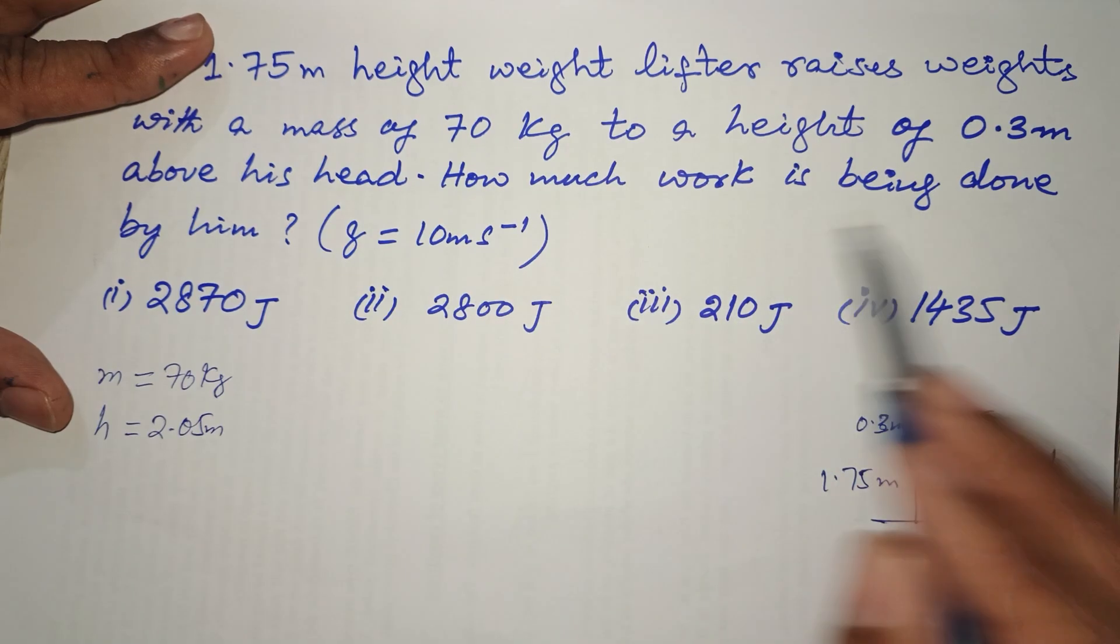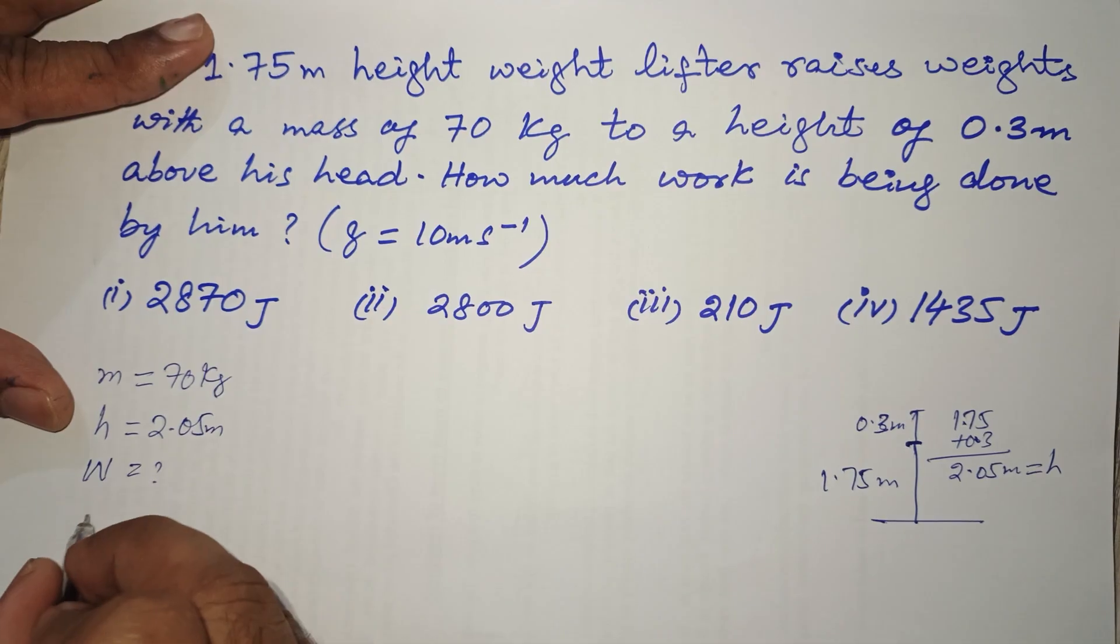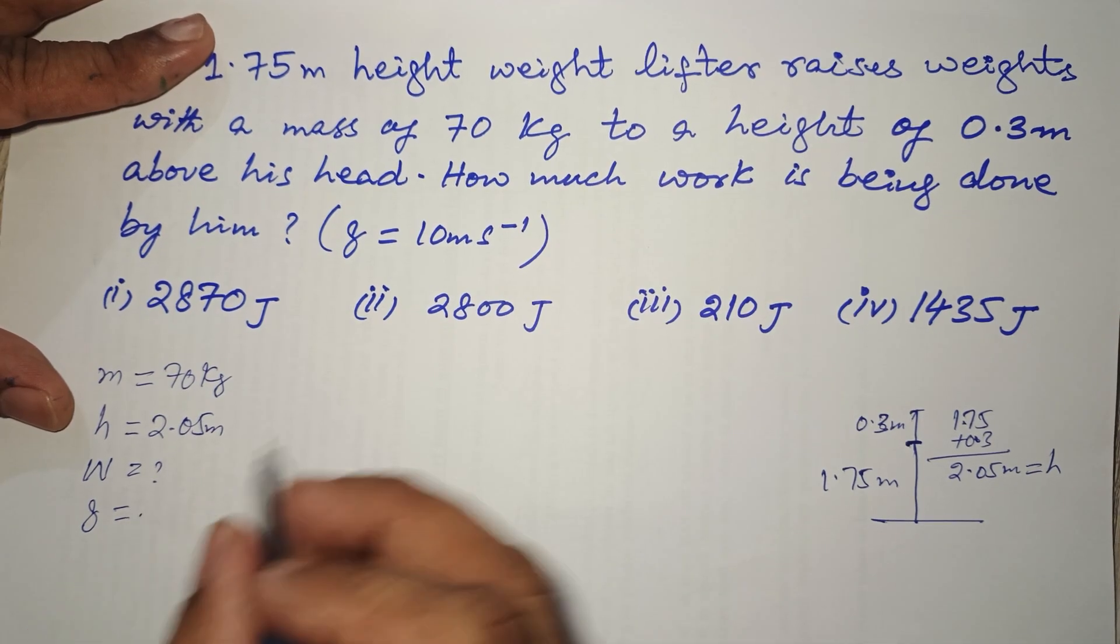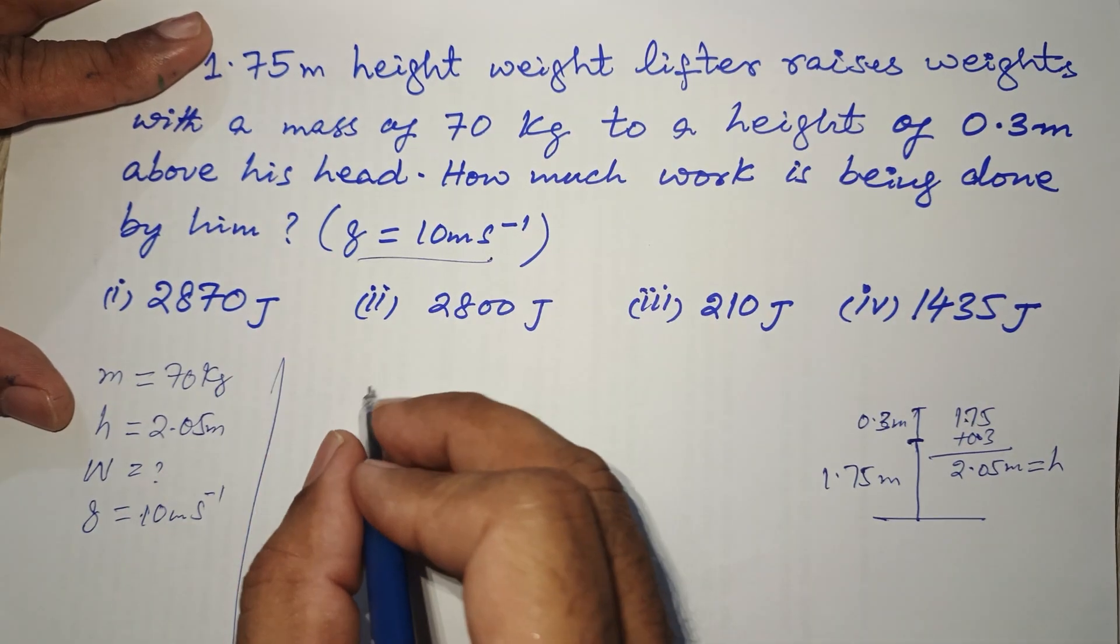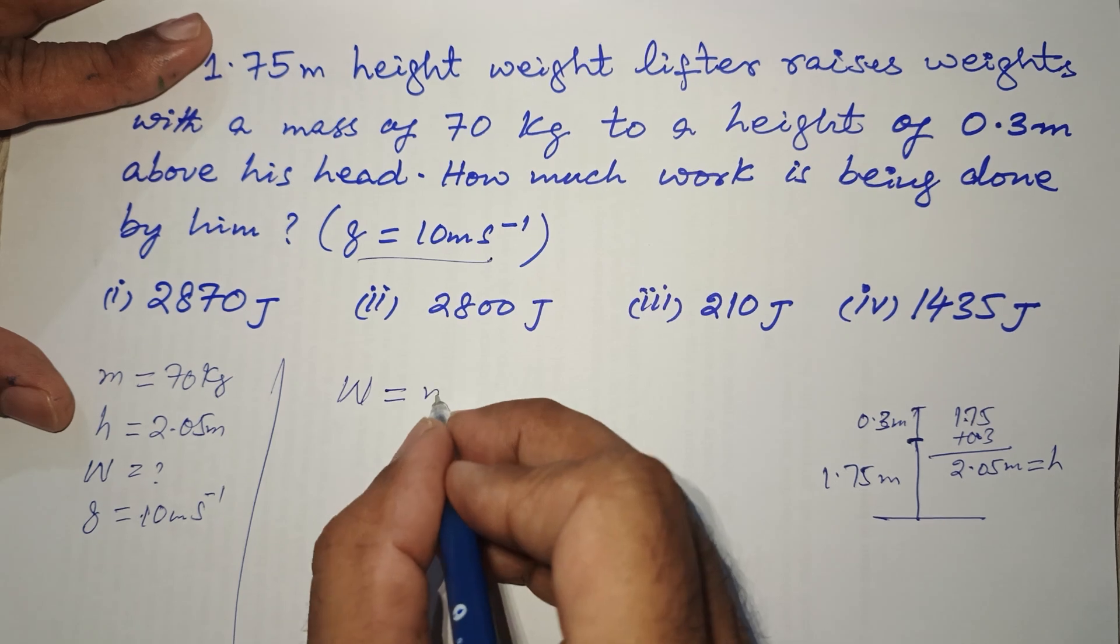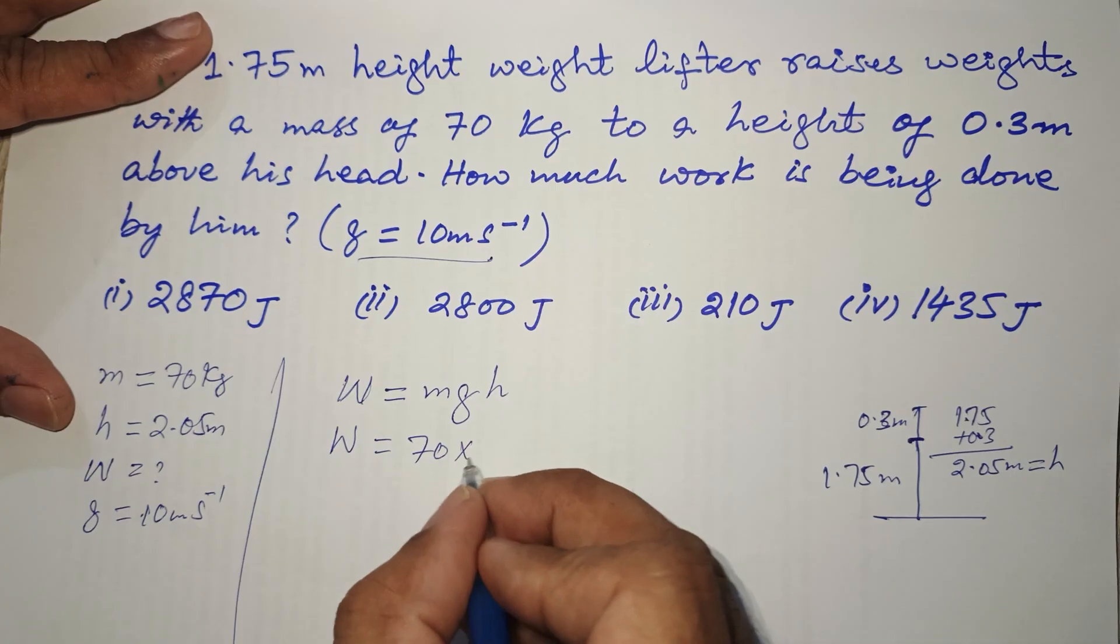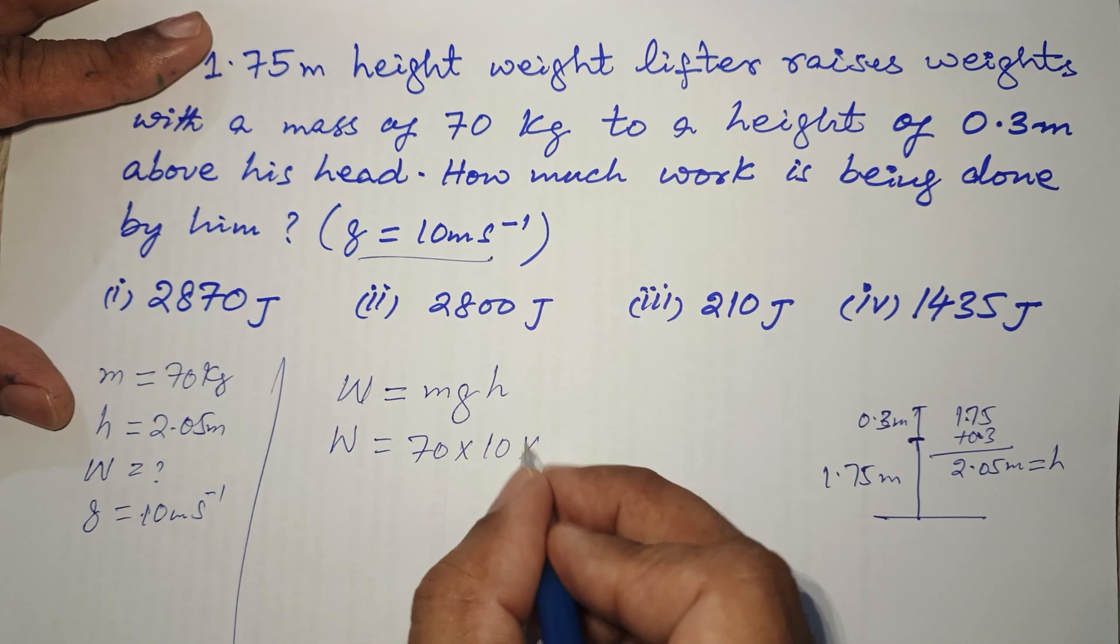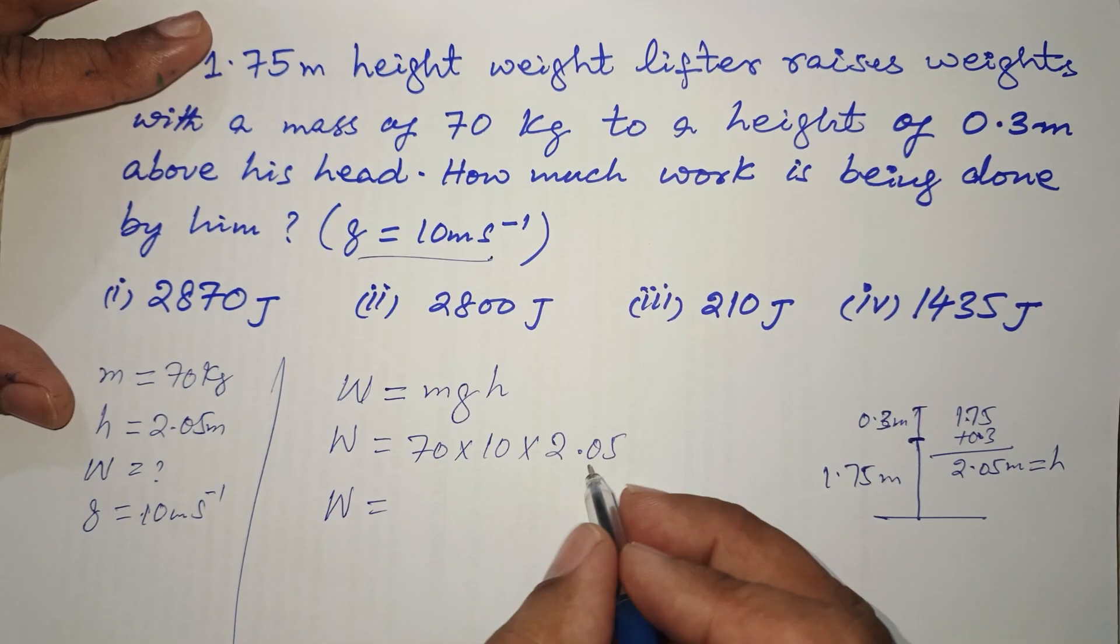How much work is being done by him? W is needed, g is given as 10 meters per second squared. So what we have to find is work done in raising the weight. W equals mgh, W equals m is 70, g is 10, h is 2.05.